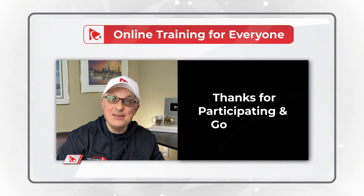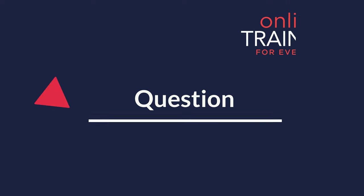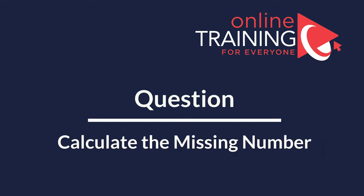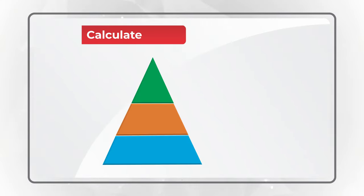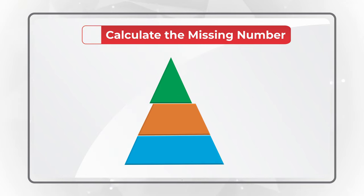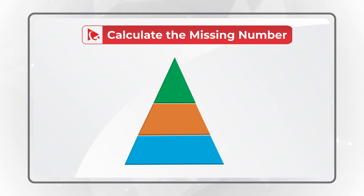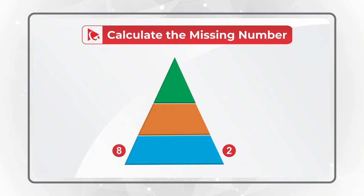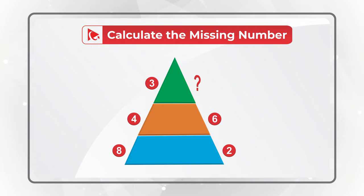Here is an amazing question to test your analytical skills. You need to calculate the missing number. You are presented with a triangle which is split into three equal or almost equal parts. At the bottom of the triangle on each side you see numbers 8 and 2, in the middle section you see numbers 4 and 6, and on the top of the triangle you see number 3 on the left, and on the right you need to calculate the missing number.